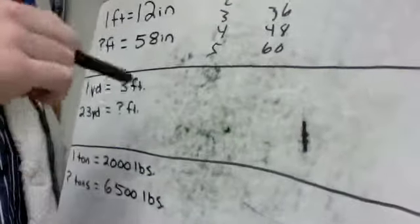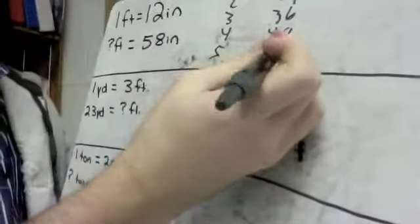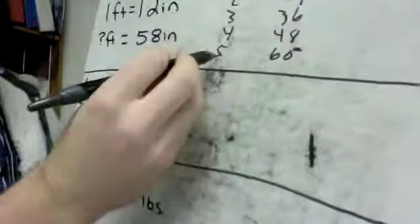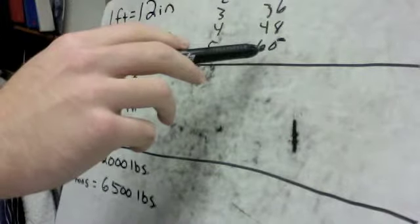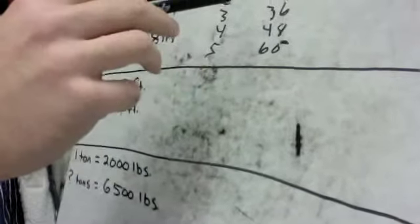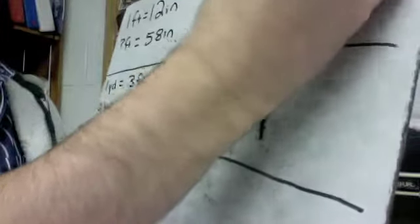And I could tell that 58 inches is just below five feet, not quite five feet. So it's going to be four something. It's two inches below five feet. So that would be four feet, 10 inches. So I know that's going to be my answer. Four feet, 10 inches.